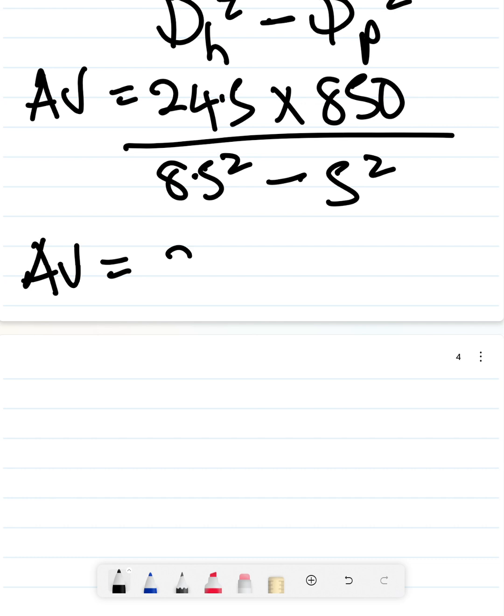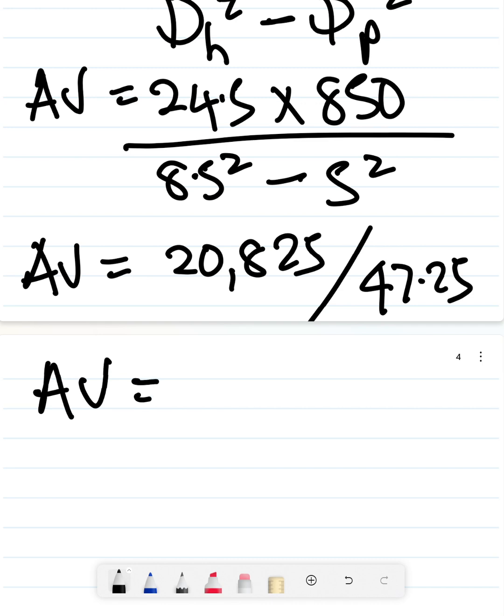The numerator is going to be 20,825 divided by your denominator which is going to be 47.25.